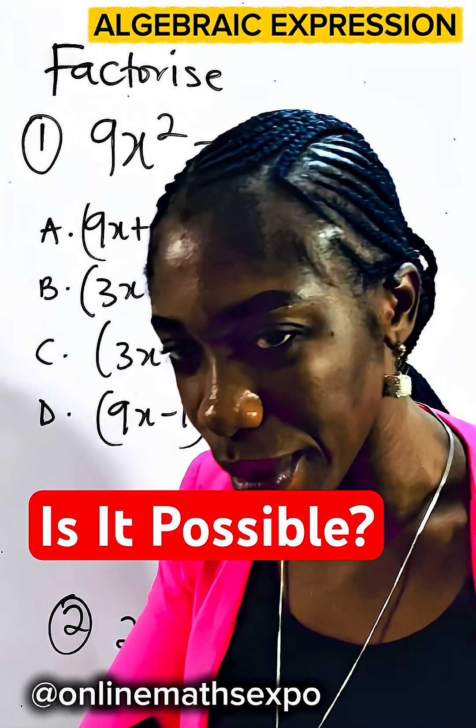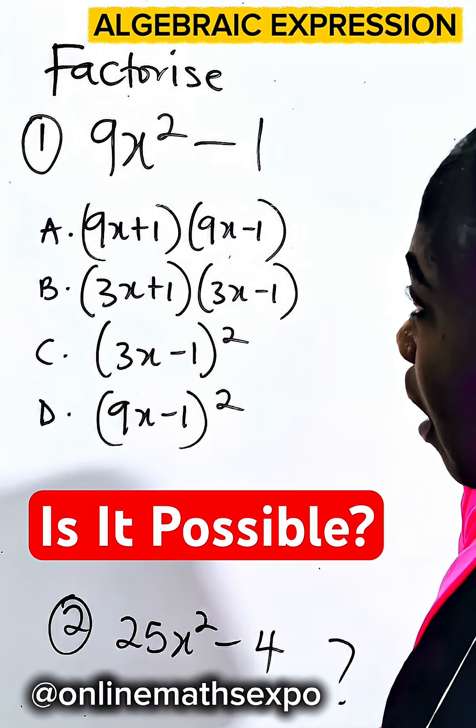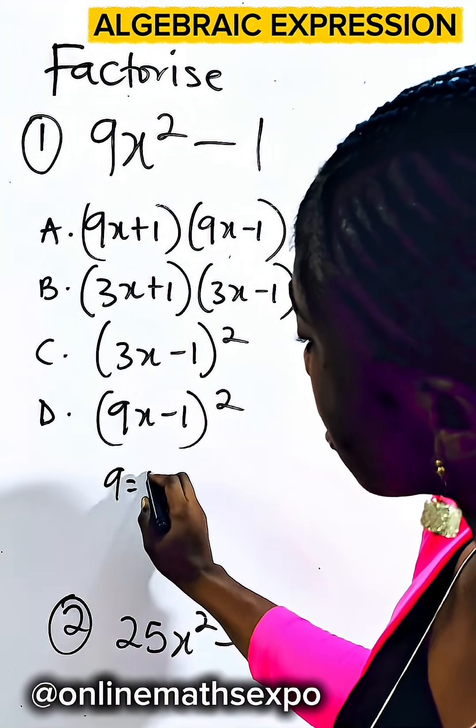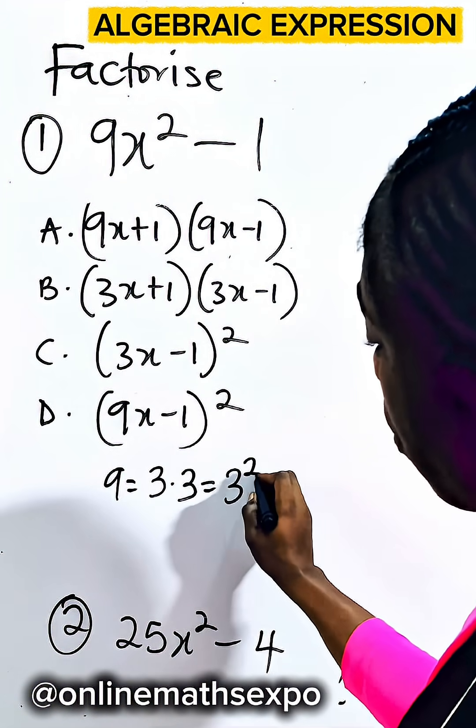To factorize this, just a reminder, you know too well that 9 is a square number because 9 is the same as 3 times 3, which is 3 squared.